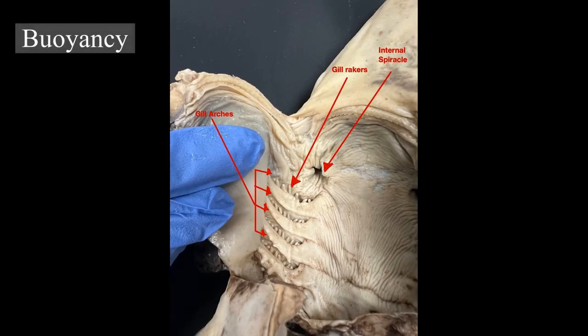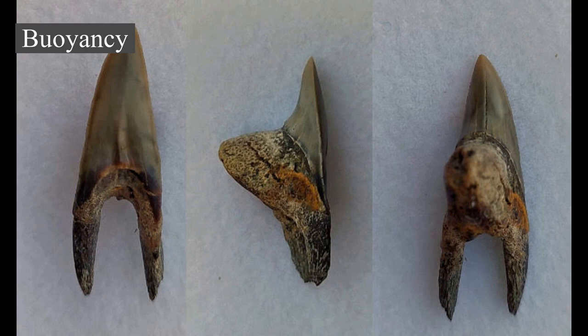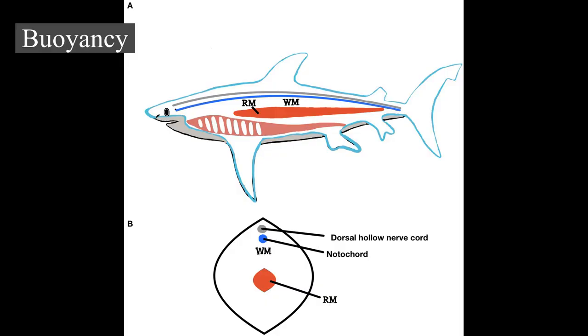Unlike bony fish, sharks do not have gas-filled swim bladders for buoyancy. Instead, sharks rely on a large liver filled with oil that contains squalene, and their cartilage, which is about half the normal density of bone. Their liver constitutes up to 30% of their total body mass. The liver's effectiveness is limited, so sharks employ dynamic lift to maintain depth while swimming. Sand tiger sharks store air in their stomachs, using it as a form of swim bladder. Bottom-dwelling sharks, like the nurse shark, have negative buoyancy, allowing them to rest on the ocean floor. Some sharks, if inverted or stroked on the nose, enter a natural state of tonic immobility, which researchers use to handle sharks safely.